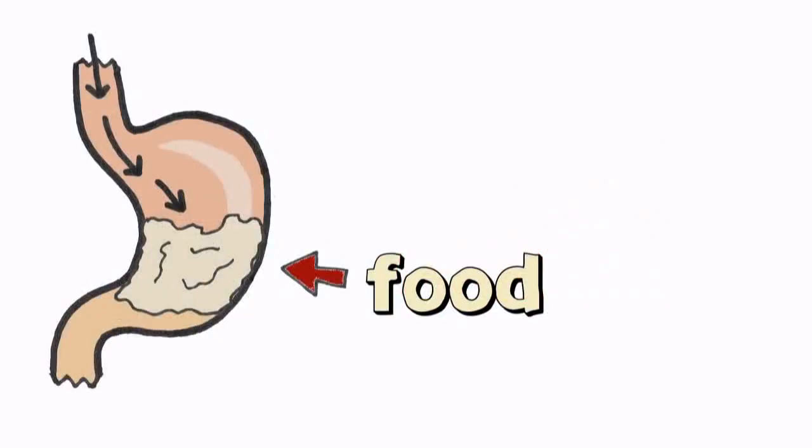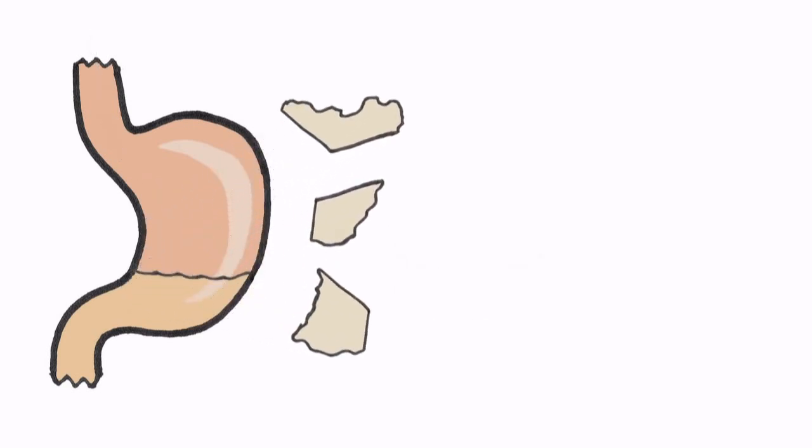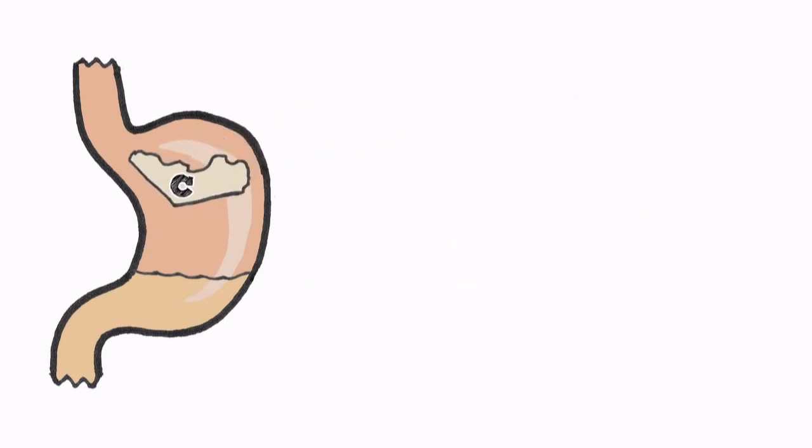When we eat, food travels to the stomach. Food is made up of three basic nutrients: carbohydrates, proteins, and fats. During digestion, carbohydrates are broken down into sugar, otherwise known as glucose.